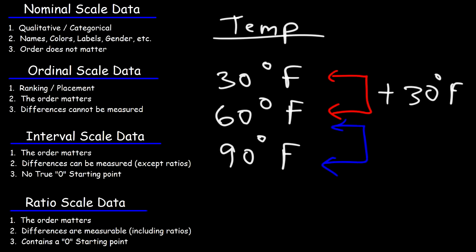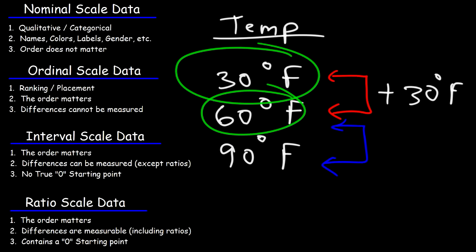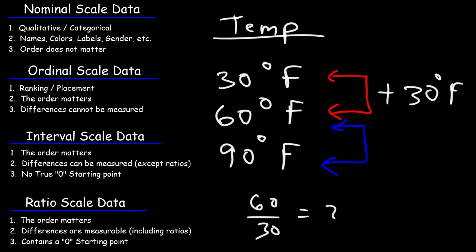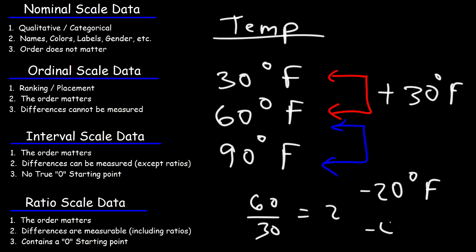However, you can't measure ratios for this form of data. 60 degrees is not two times as hot as 30 degrees — dividing 60 by 30 gives you 2, but that doesn't mean it's twice as hot. Also, there is no true zero starting point. Zero degrees Fahrenheit is not the lowest temperature and is not the absence of heat, because you could have negative values like negative 20 degrees Fahrenheit or negative 40 degrees Celsius, which also makes it interval scale data.